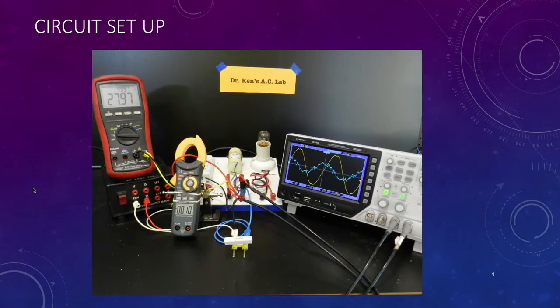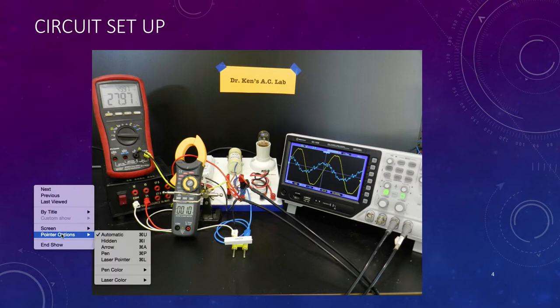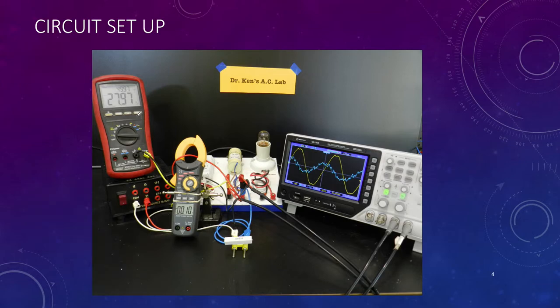So here's our basic setup. It's a fair bit here, so I'll just go quickly through it with you. We have a voltmeter across the supply measuring the voltage, here's our clip-on ammeter measuring the current.